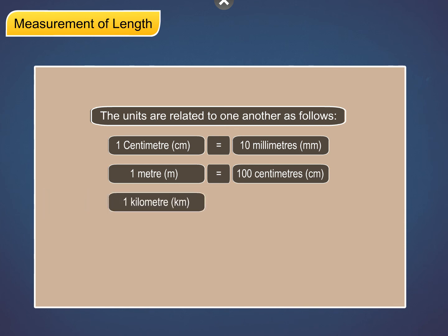One kilometre (km) is equal to 1000 metres (m).